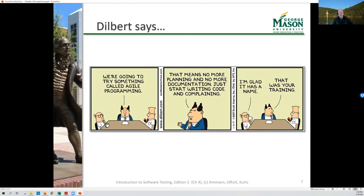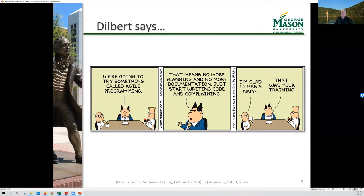Dilbert gets a chance to try agile programming — no more documentation, just start writing code and complaining. When we're talking about agile development, we have to take a different view of correctness.